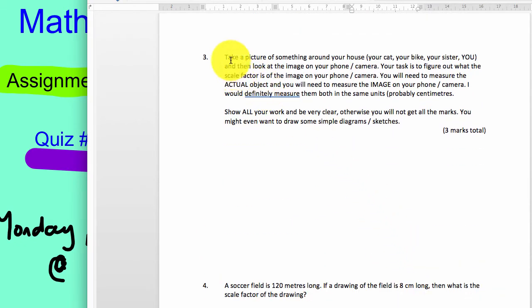I just want to read this one over. So what you're going to do is you're going to take a picture of something around your house. It can be anything. It can be your cat, your bike, your sister, your microwave, your television, you, whatever. And then you're going to look at the image on your phone or your camera.